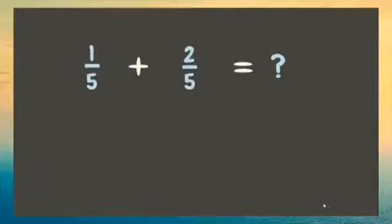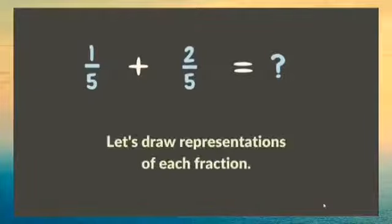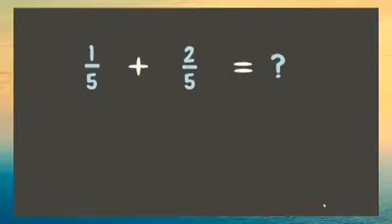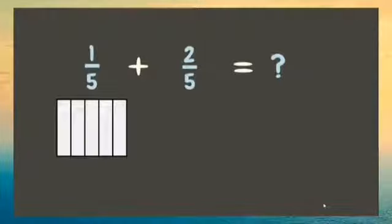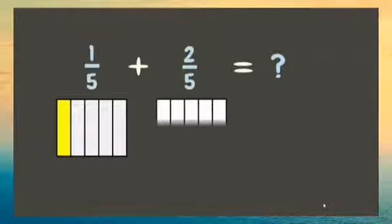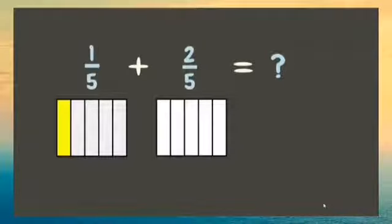Let's try to solve this problem by drawing some representations. One-fifth can be represented as a whole divided into five equal parts where one part is taken. While two-fifths can be represented as a whole divided into five equal parts where two parts are taken. Now let's add the two.